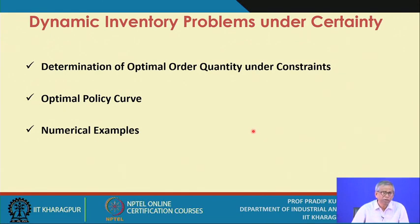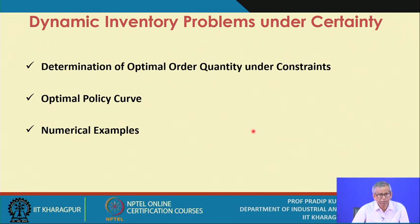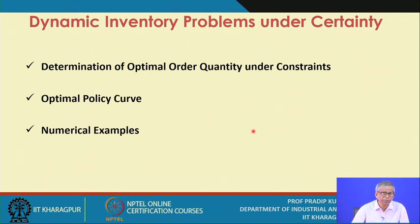Till now, while we determined the optimal order quantity for a given inventory control system, we assumed there are no constraints. But in a real-world situation, many a time we have many types of constraints, and when these constraints are acting, it is quite natural to determine the optimal order quantity in their presence. We will also bring in the concept of the optimal policy curve.